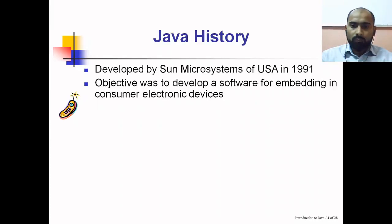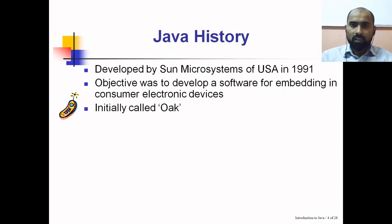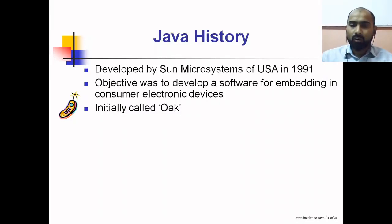The objective was to develop software for embedding in consumer electronic devices like mobiles, PDAs, washing machines, and microwave ovens. The original intent of Java was not for computers. Initially Java was called Oak. One story behind the name says that there was an oak tree beside the office of Sun Microsystems, visible from their window, and looking at that tree they got the idea for the name Oak.